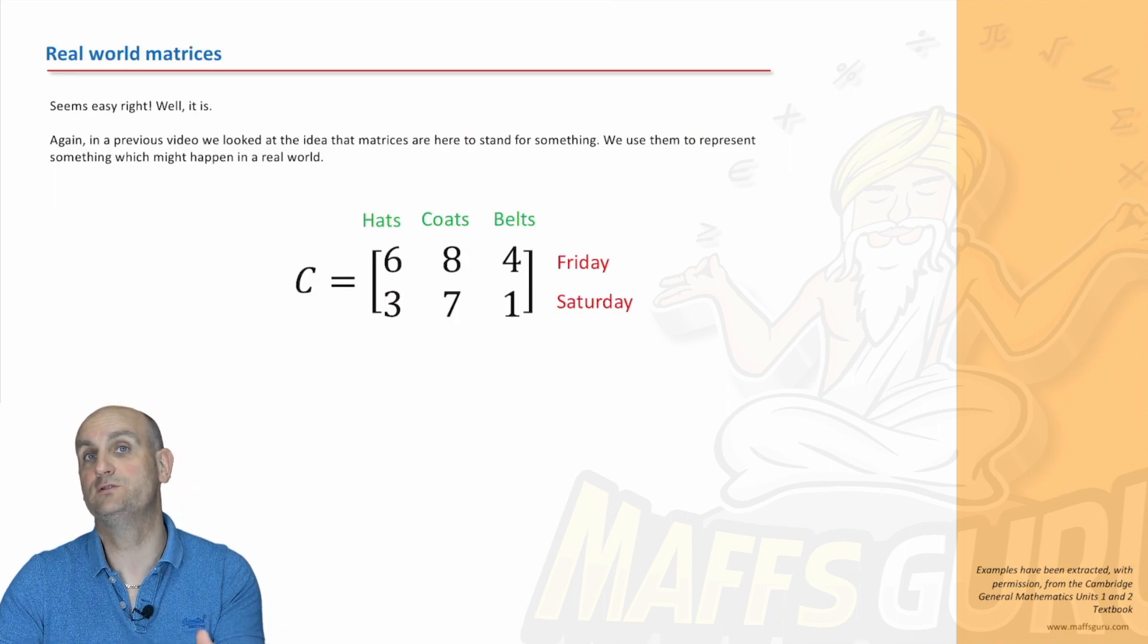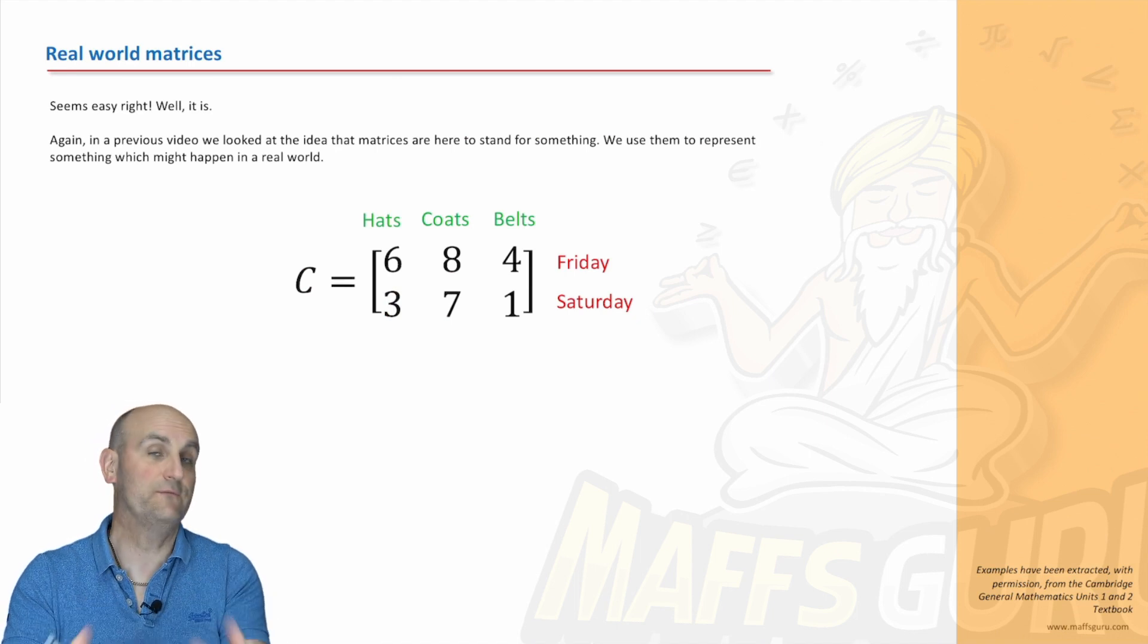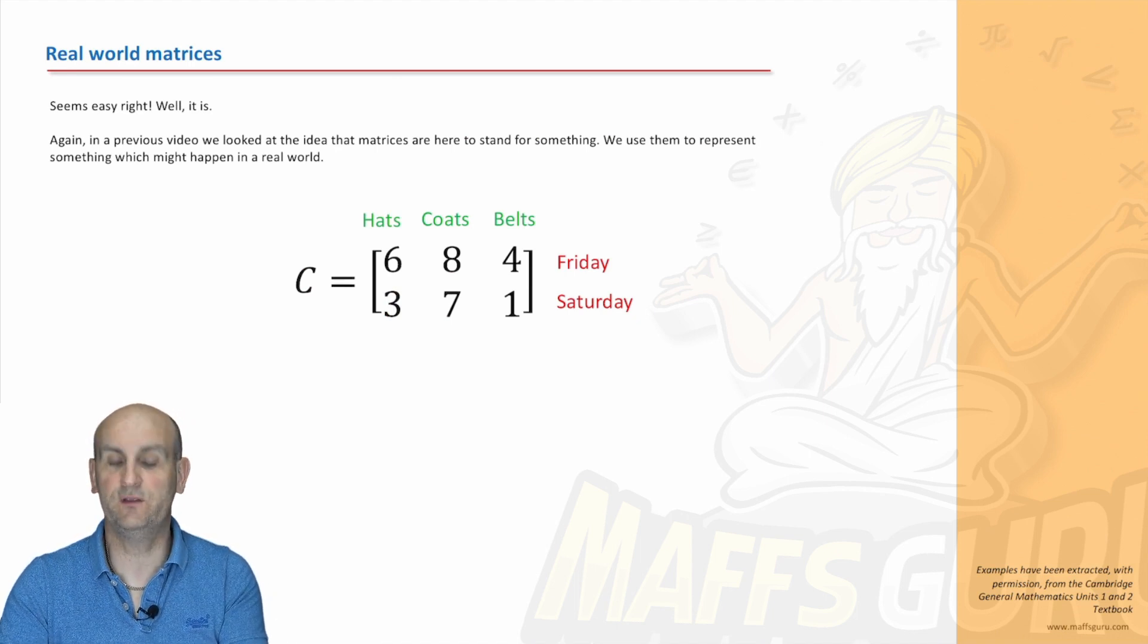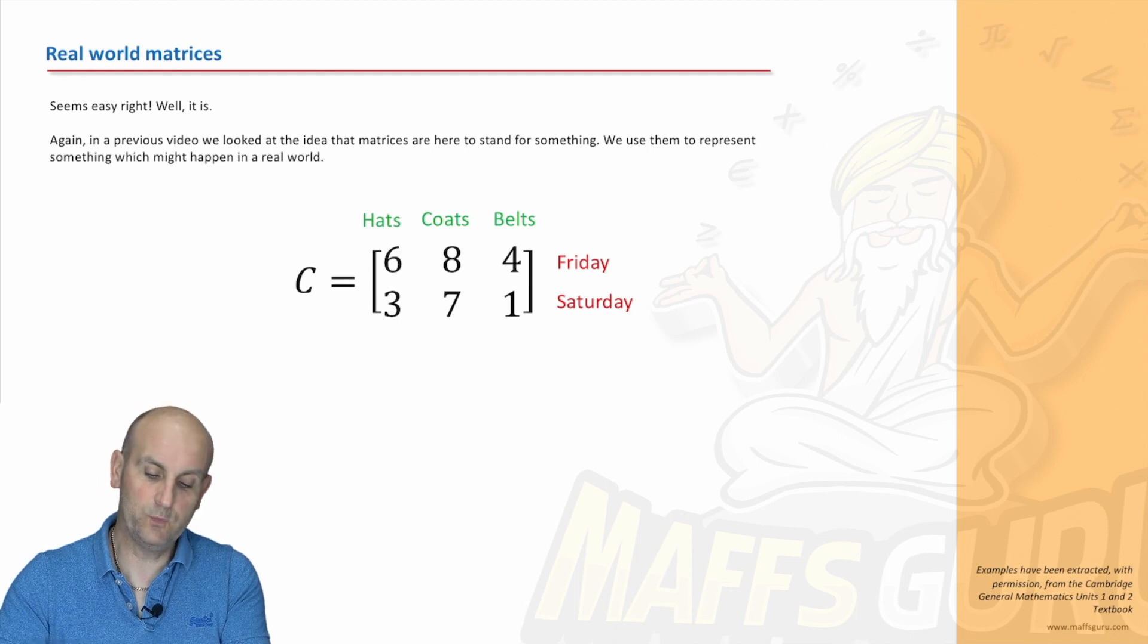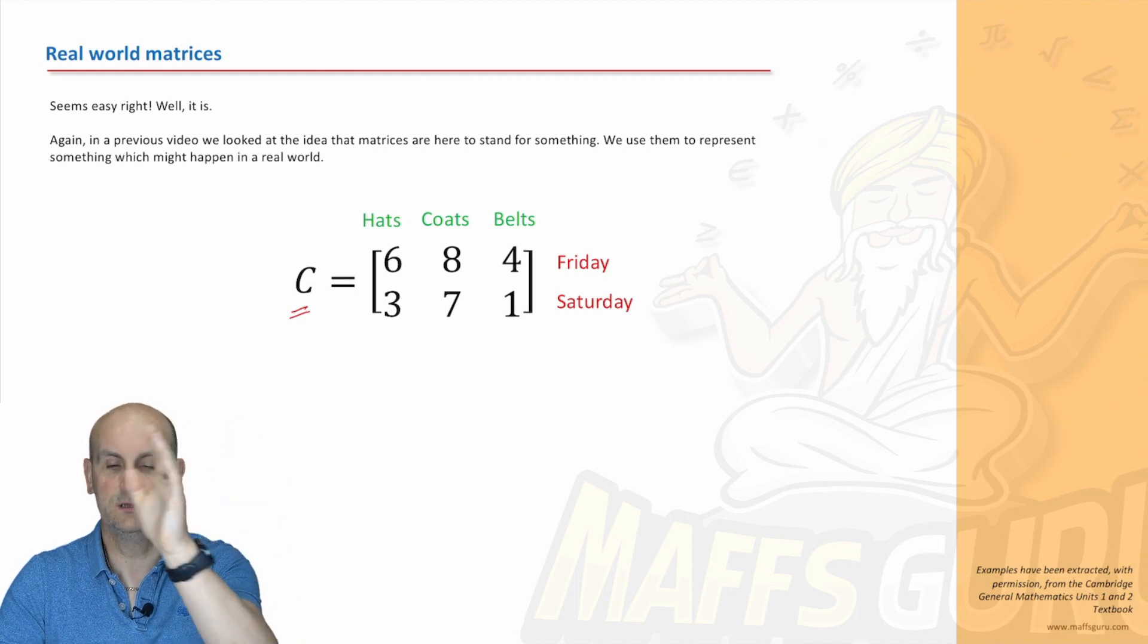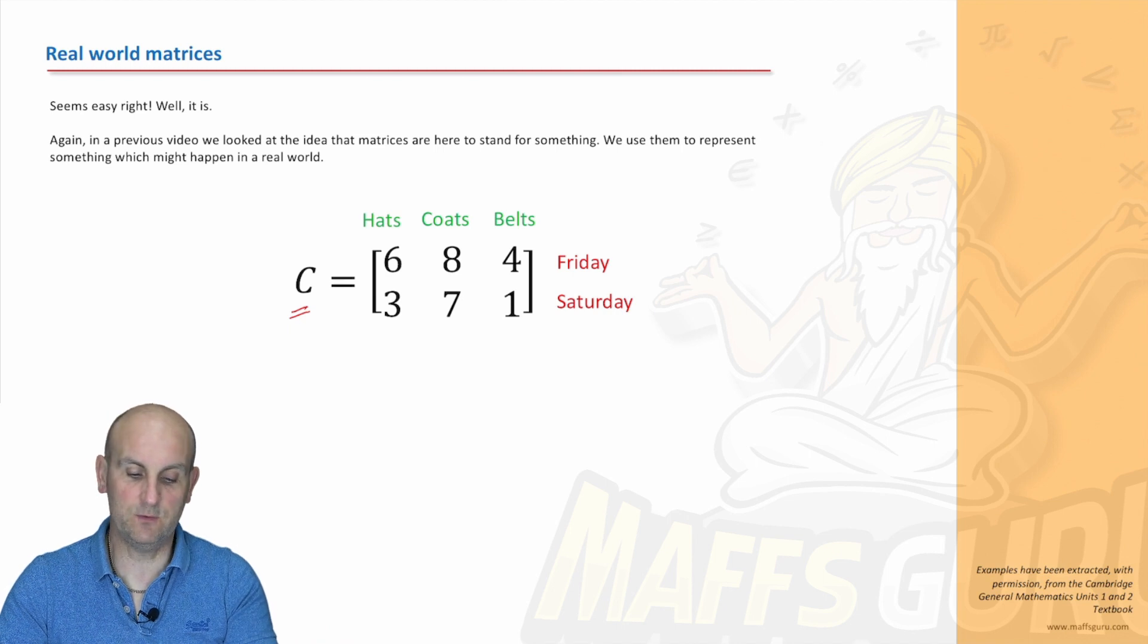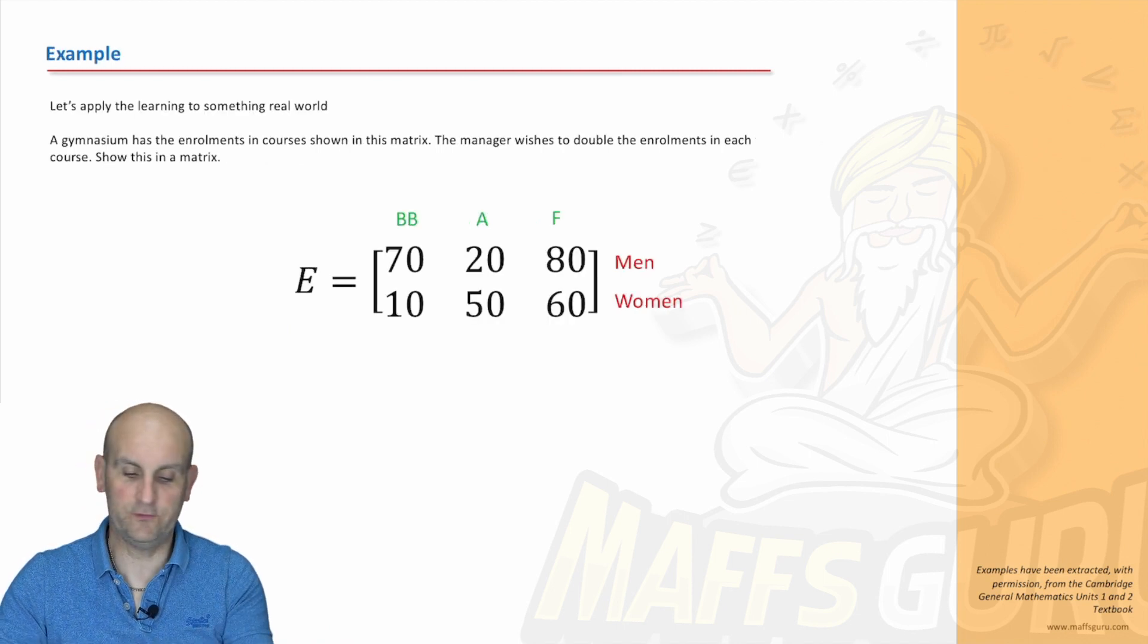What about this? Now real world matrices. The whole point of matrices is to have them real world. And if you remember again from the previous video we looked, I think it was the very first video, we looked at the idea that we could have an amount of clothing to stand for the number of hats, coats and belts sold on a Friday and a Saturday.